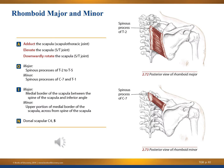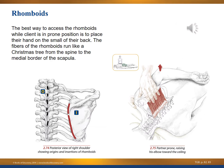Here's a flashcard view of rhomboid major and minor with action, origin, insertion, and innervation — feel free to pause if you need more time. Some questions on the MBLEX exam are directional; one question addresses how best to access the rhomboids. With the client in prone position, place their hand on the small of their back. The fibers of the rhomboids run like a Christmas tree down from the spine to the medial border of the scapula.